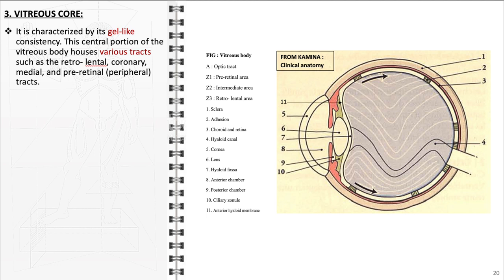The coronary tract around the eye's periphery, the medial tract, and the pre-retinal tract near the retina. These tracts not only maintain the vitreous body's shape and consistency but also play a role in the eye's biomechanics, absorbing shocks and helping to maintain its shape.